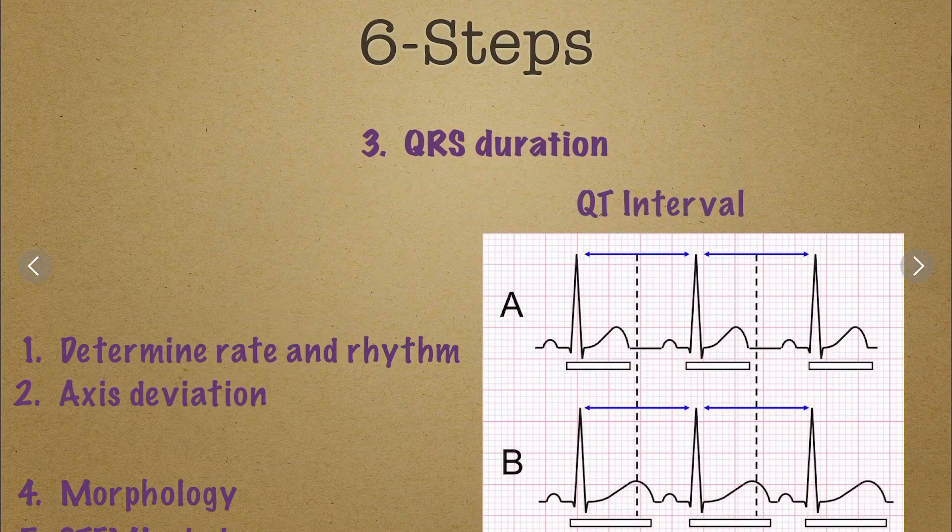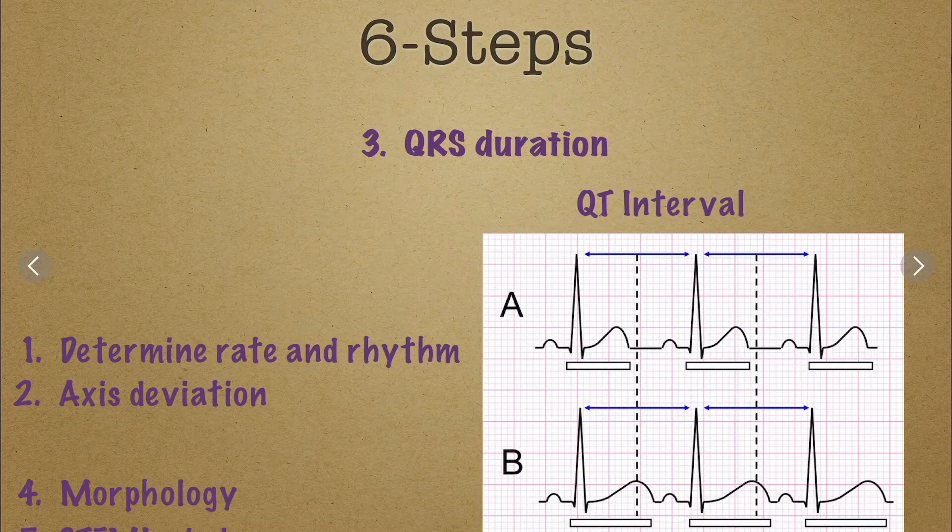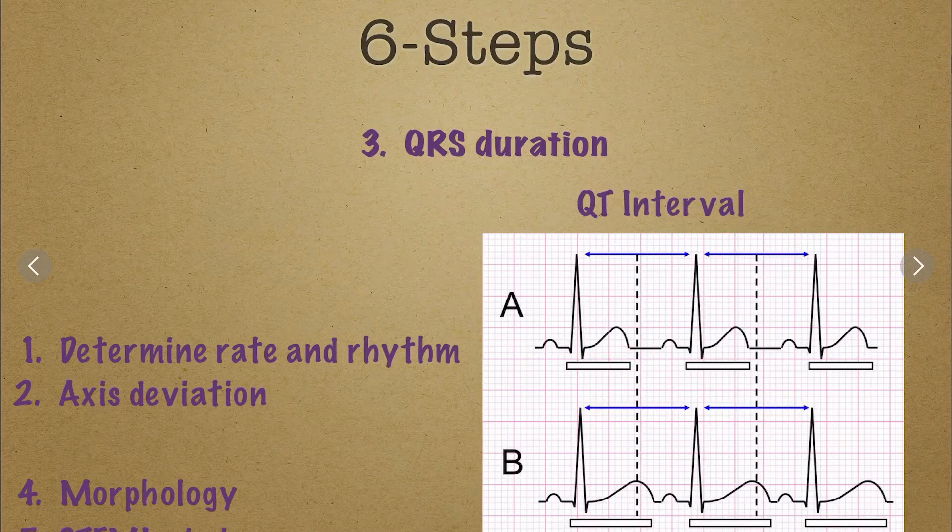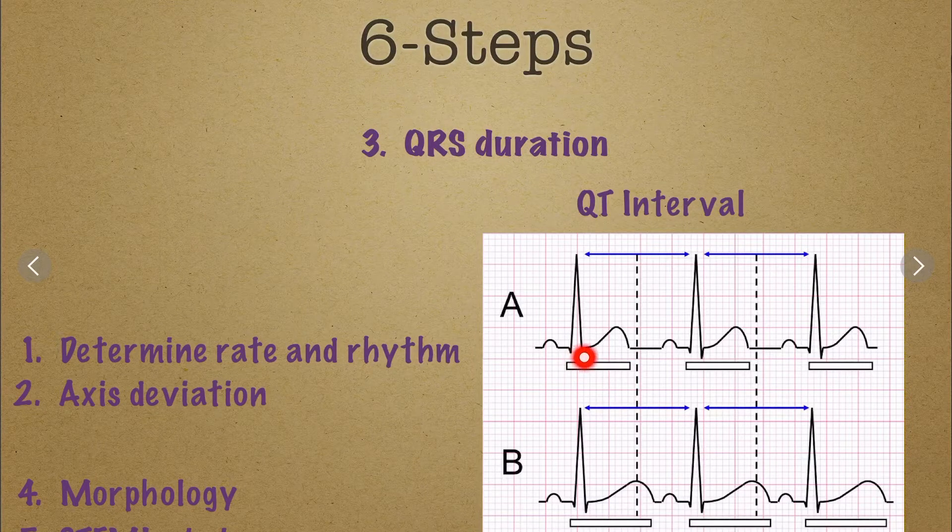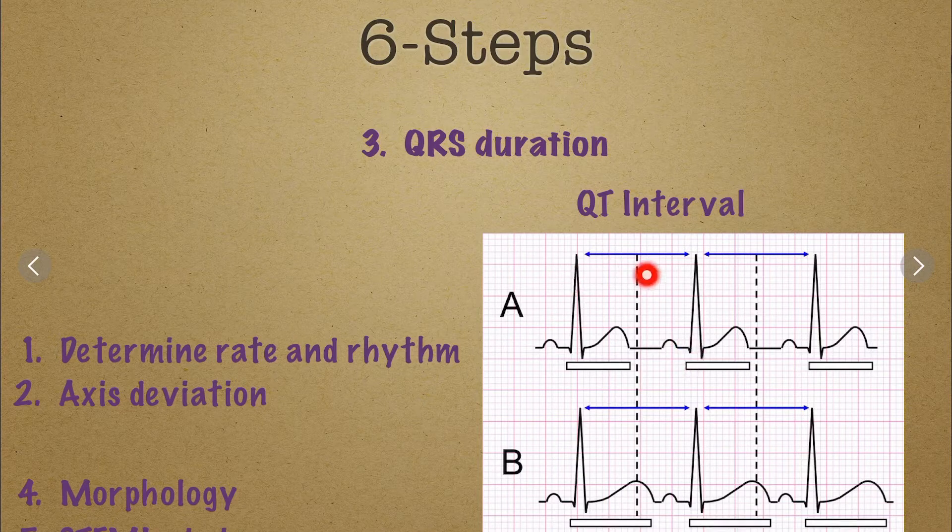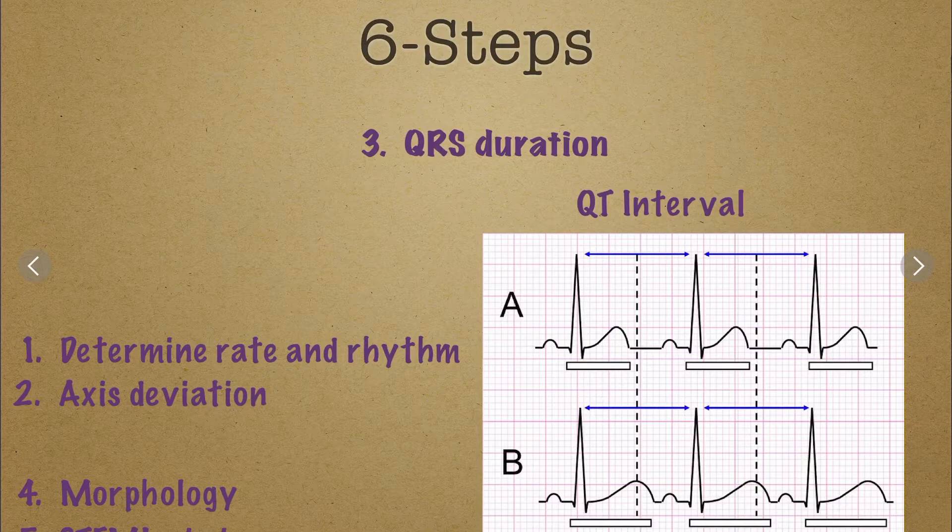After that, we look at QRS duration or QT interval. And this is one that we haven't really talked about yet. What we're trying to determine here is if I have a long QT syndrome. So between the Q and the end of the T should be less than half of the distance from R to R. So however far apart those, these two complexes are, the QT should be half of that or less than half of that. If it's more than half of that,